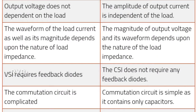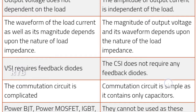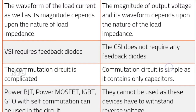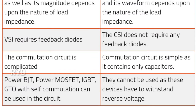VSI requires feedback diodes whereas CSI does not require any feedback diodes. The commutation circuit in VSI is complicated, while in CSI the commutation circuit is simple as it contains only capacitors. The devices used in VSI are BJT, Power MOSFET, IGBT, and GTO with self-commutation. These devices cannot be used in CSI as they have to withstand reverse voltage.